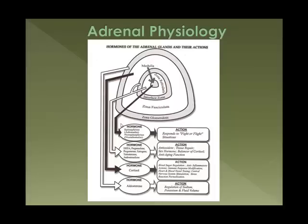From the cortex, it produces DHEA or dihydroepiandosterone, pregnenolone, progesterone, estrogens, testosterone, and androstenedione. All of those are gender hormones or precursors to your gender hormones, and they can do some balancing of other hormones in the system. Some, especially DHEA, estrogen, and testosterone, have some anti-aging functions as well.